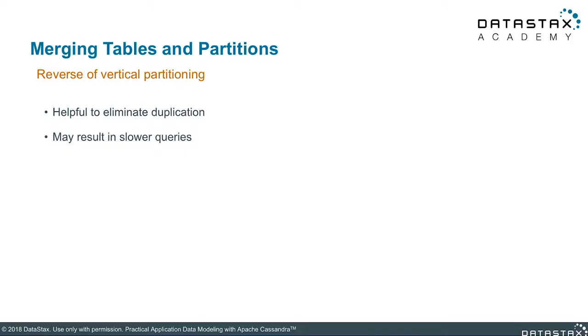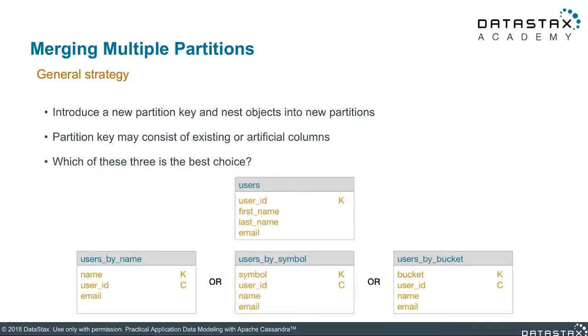If you can split tables and partitions, you can also do the reverse, which is merging them together. This may be helpful in eliminating duplication and reducing complexity, but may come at the expense of having queries run slower. When merging partitions, the general strategy is to introduce a new partition key and nest objects in the new partition. The new key can use either existing columns or a new artificial column. In our example below, we have a users table where each partition is a single user. Our goal is to merge users together so there are multiple users in a single partition. Three possible tables are shown: one merges users based on first name and last name using a new name column as a partition key; another merges users based on a related attribute called symbol; and the final one uses an arbitrary bucket column. The answer to which is best, of course, is that it depends — each has certain advantages and disadvantages.